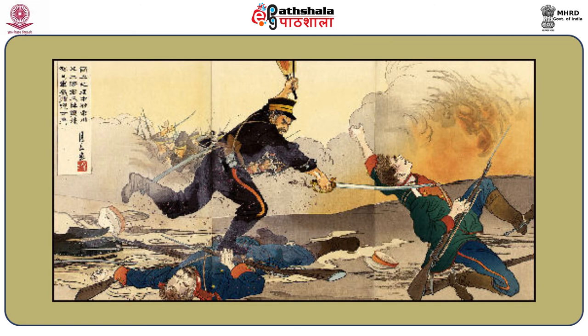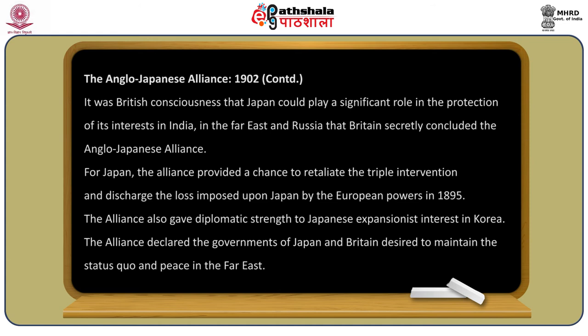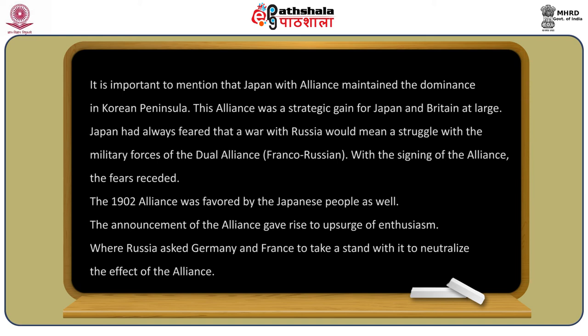It was Britain's assessment that Japan could play a significant role in the protection of its interests in India, the Far East, and against Russia, that Britain secretly concluded the Anglo-Japanese alliance. For Japan, the alliance provided a chance to retaliate against the Triple Intervention and discharge the losses imposed upon Japan by the European powers in 1895. The alliance also gave diplomatic strength to Japanese expansionist interests in Korea. The alliance declared that the governments of Japan and Britain would maintain the status quo and peace in the Far East.